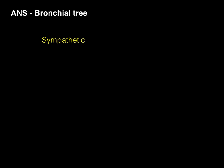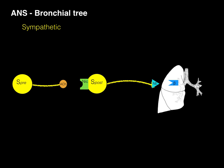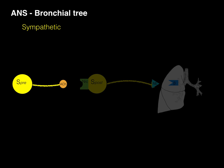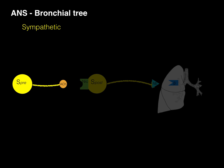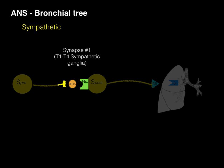Let's start with our sympathetic nervous system. We have this schematic of our pre- and postganglionic sympathetics going to our lungs. Starting with SPRE, which stands for sympathetic preganglionic neuron, which conducts an impulse all the way down to the terminal axon, which then releases acetylcholine into synapse number one. This occurs at the T1 to T4 sympathetic ganglia.